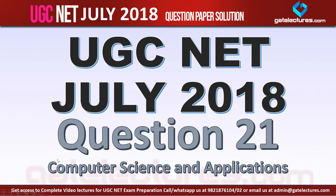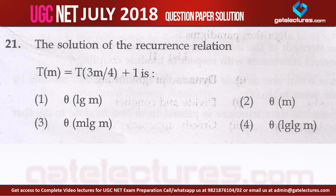Let us look at question number 21 of the UGC NET July 2018 examination for computer science. This question is from algorithm design and analysis, where they give us a recurrence relation and we need to find the time complexity for this recurrence relation.